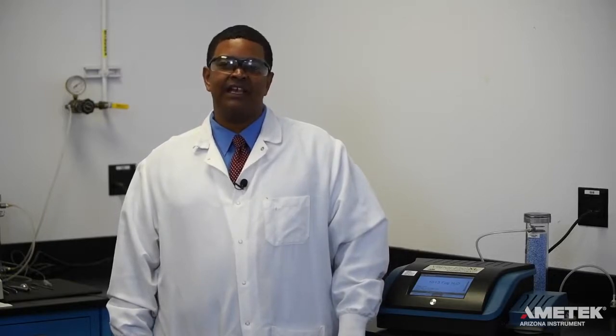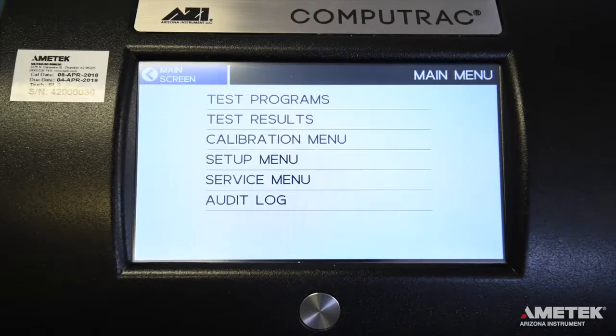In order to check the flow, first verify that the pressure of the carrier gas being supplied to the instrument is between 17 and 22 psi and that the instrument has been powered on for at least 20 minutes with the gas connected. Once those conditions are met, press the menu button on the main screen.